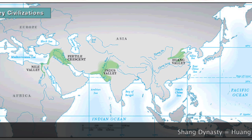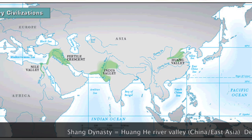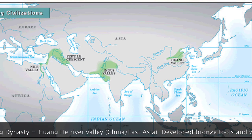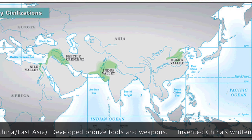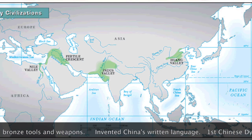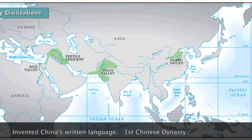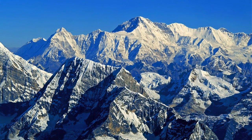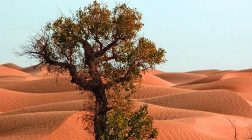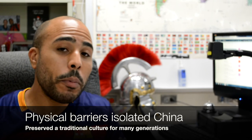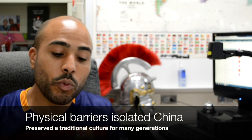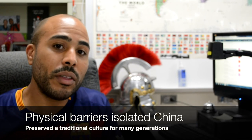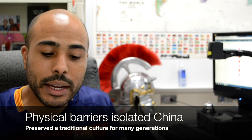Next up is the Shang Dynasty in China. They were masters at creating bronze and were also the first ones to develop China's written language — a really special thing about the Shang Dynasty. They practiced ancestor worship, and their traditions were able to stay intact for so long that some of them are still around today. This is because China was isolated by geographic barriers like the Himalaya Mountains and the Taklamakan Desert, which were very difficult for people to traverse. That's why for a long time few people knew about China.